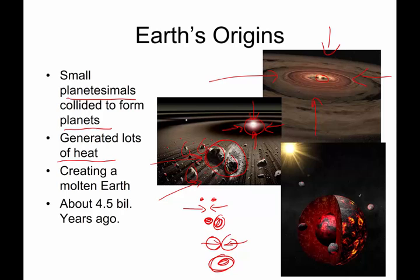In this process, lots of heat is generated when high-speed objects hit each other. This created a molten Earth. About 4.5 billion years ago, when Earth was created, it was a big, hot, molten ball of goo.